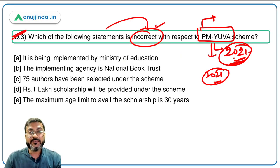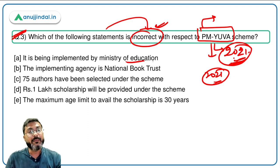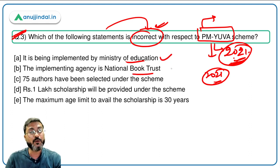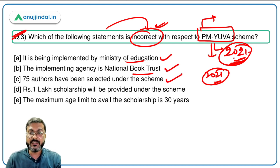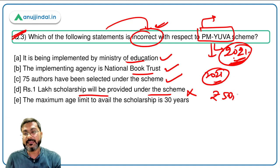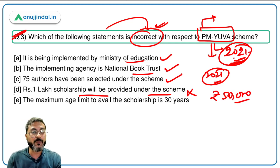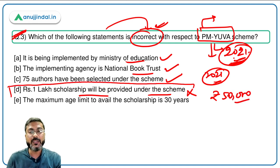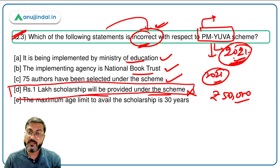Reviewing the statements: the scheme is implemented by the Ministry of Education — correct. The implementing agency is National Book Trust — correct. 75 authors have been selected — correct. The statement that Rs. 1 lakh scholarship will be provided is incorrect — the actual amount is Rs. 50,000. Therefore, option D is the correct answer, as we need to identify the incorrect statement.